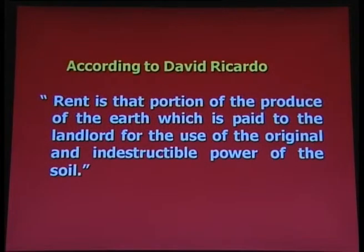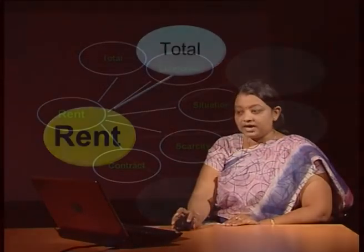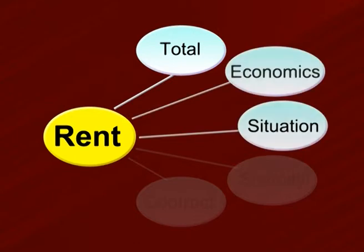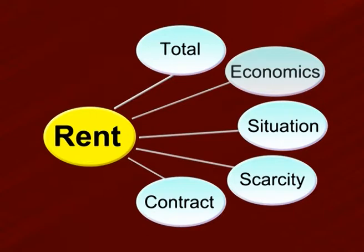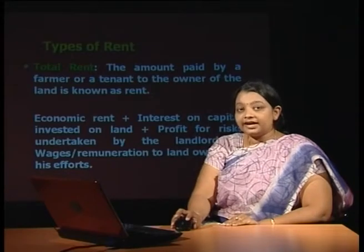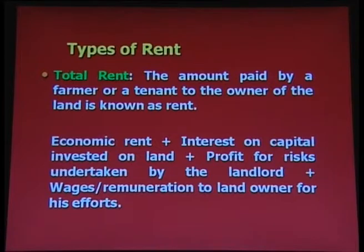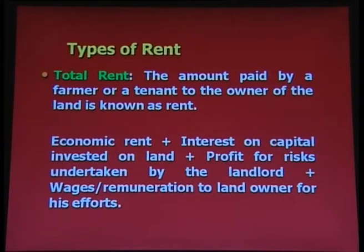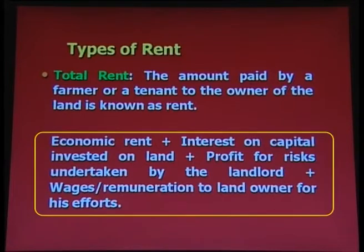On the basis of this definition, rent can be divided into five parts: total rent, economic rent, situation rent, scarcity rent and contract rent. Total rent is the amount paid by a farmer or tenant to the owner of the land. We can obtain total rent by adding interest on capital invested on land, profit for risk undertaken by the landlord, wages or remuneration to the land owner for his efforts, and economic rent. By adding up all these types of income, we can obtain total rent.